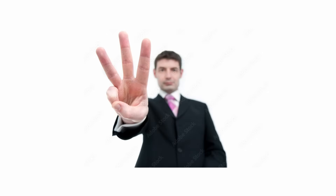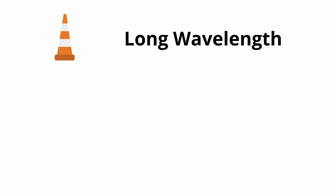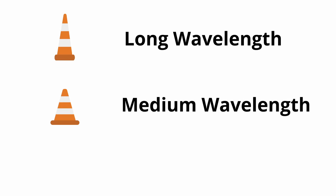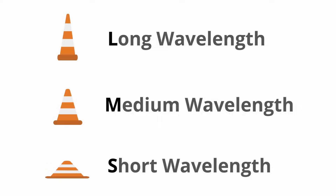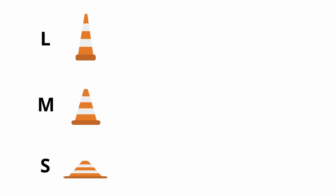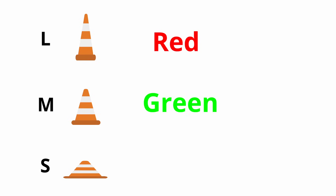Cones help you perceive color, but there are three different types of cones: long, medium, and short cones. L cones, which are sensitive to red; M cones, which are sensitive to green; and S cones, which are sensitive to blue.